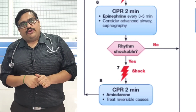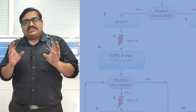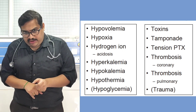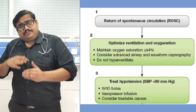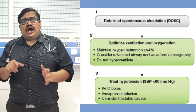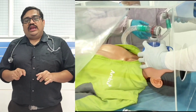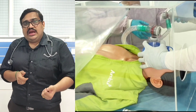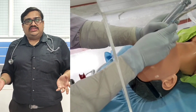Continue this cycle for shockable rhythm, always discussing reversible causes with your team. Send blood gas analysis and potassium levels to rule out the 5Hs and 5Ts. Once the patient achieves return of spontaneous circulation — ROSC — proceed to post-cardiac arrest management. If an experienced hand is available to manage the airway, secure a definitive airway by intubating the patient, but intubation should not be time-consuming and must not interrupt CPR for more than 10 seconds. The priority is compressions — remember CAB: compressions, airway, and breathing.